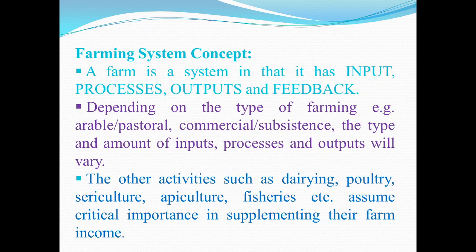What is the concept of a farming system? A farm is a system in that it has inputs, processes, outputs and feedback. Depending on the types of farming — for example arable, pastoral, commercial or subsistence — the type and amount of inputs, processes and outputs will vary.